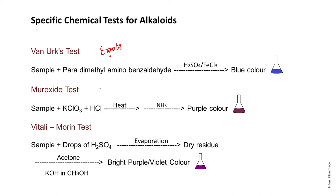The main reagent for the Van Urk test is para-dimethylaminobenzaldehyde dissolved in 100 mL of 60% sulfuric acid with 0.1 mL of 5% FeCl3 (ferric chloride solution). When the sample reacts with para-dimethylaminobenzaldehyde in the presence of H2SO4 and FeCl3 — together called Van Urk reagent — it gives a blue color, indicating a positive result meaning the sample contains ergot alkaloid.